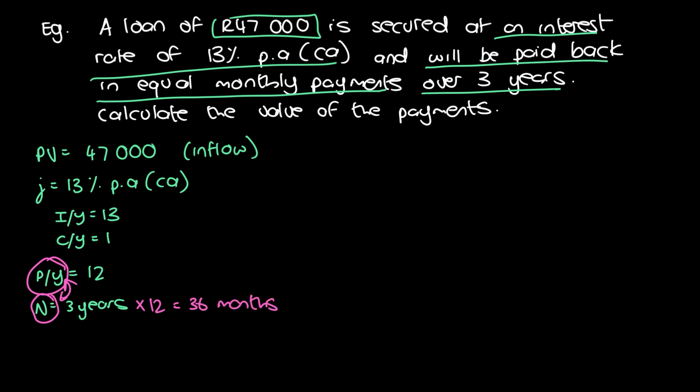A reminder: when inputting information into your financial calculator, your N units need to correspond with your payment periods. The PMT here is the unknown we want to calculate. One thing to note is that you are paying off this loan, which means the future value (FV) is equal to zero. You don't have to enter it into the financial calculator, but it's good to acknowledge it just to make sure.